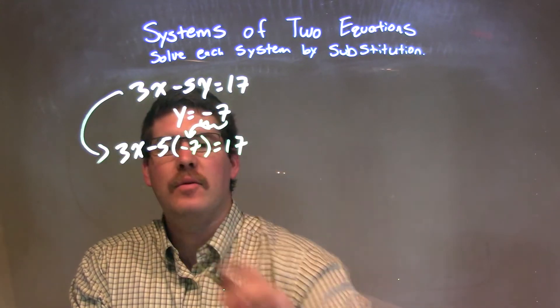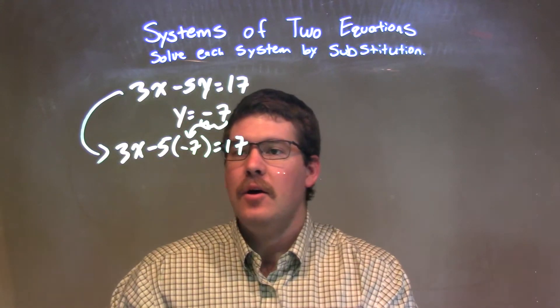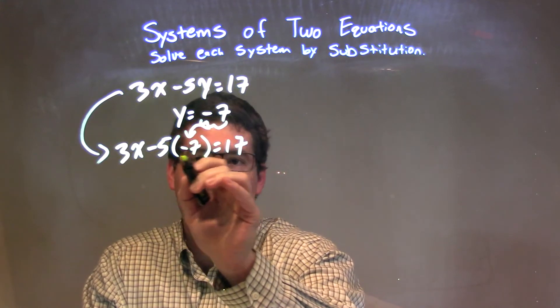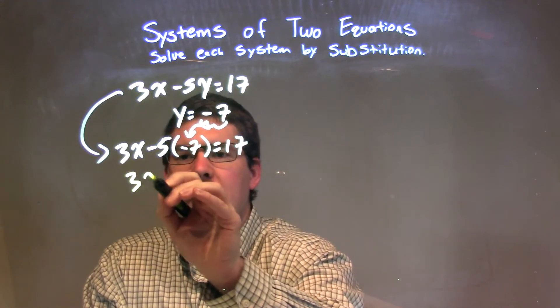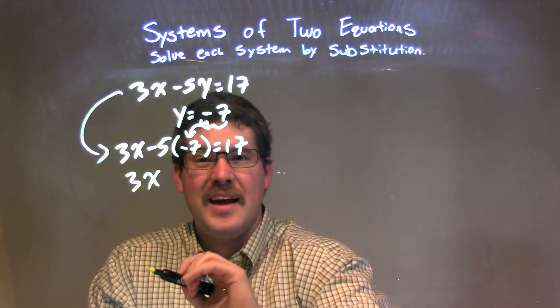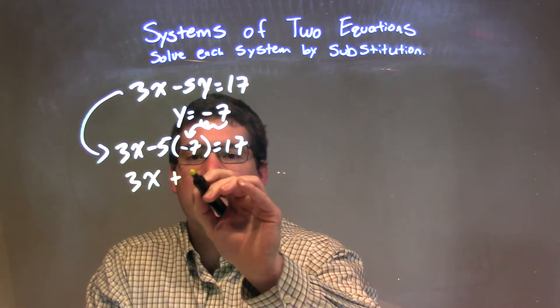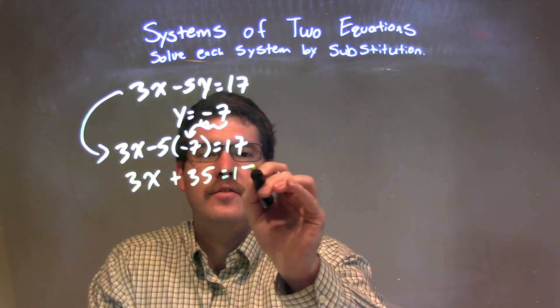So I'm going to bring down that first equation right there. Well, pretty simple. Let's distribute that negative 5, or multiply it out. So 3x times negative 5 times negative 7 is a positive 35, equals 17.